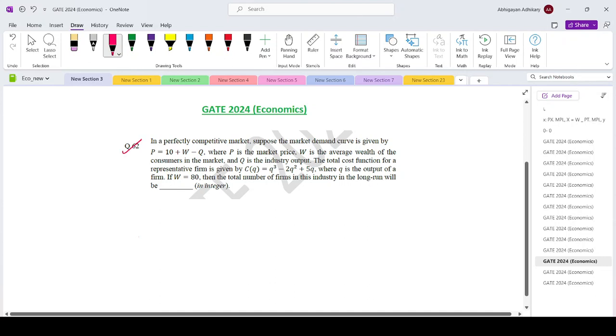In a perfectly competitive market, suppose the market demand curve is given by P equals 10 plus W minus Q, where P is the market price, W is the average wealth of the consumers in the market, and Q is the industry output.